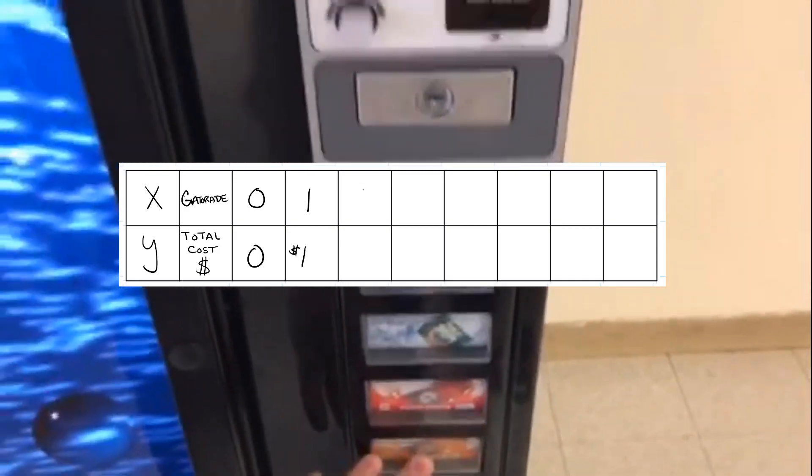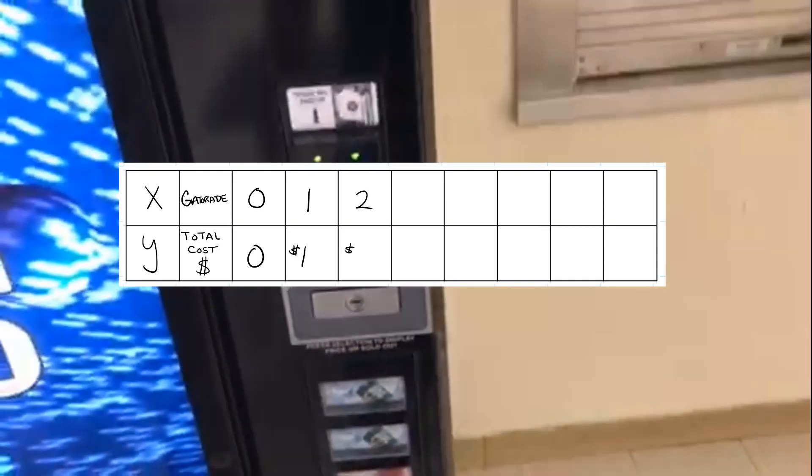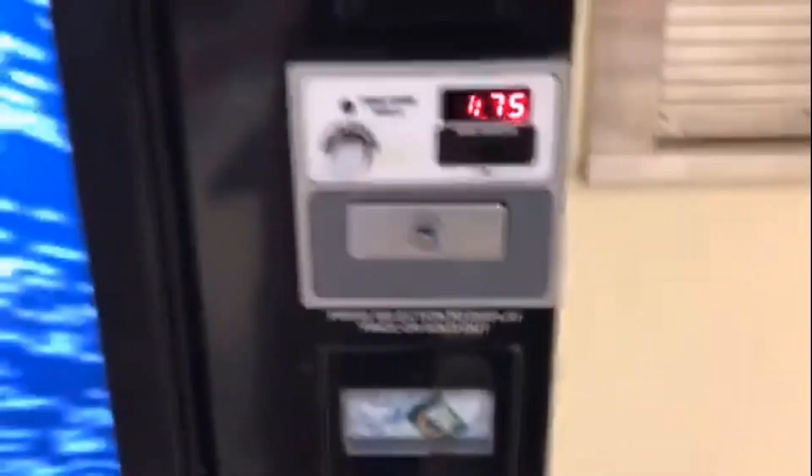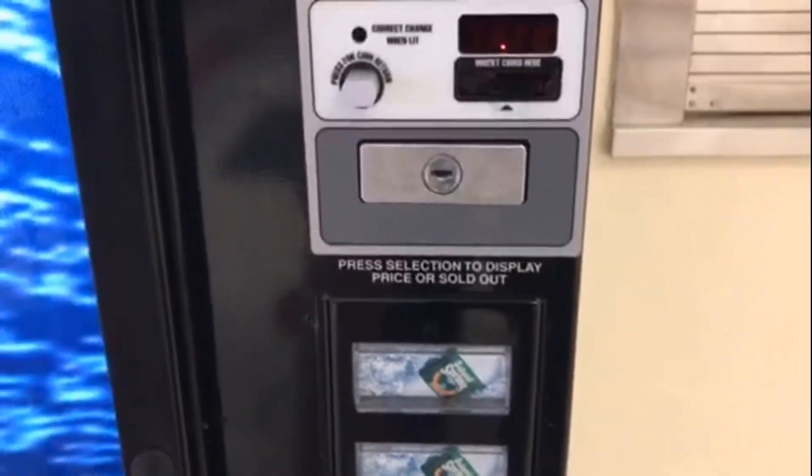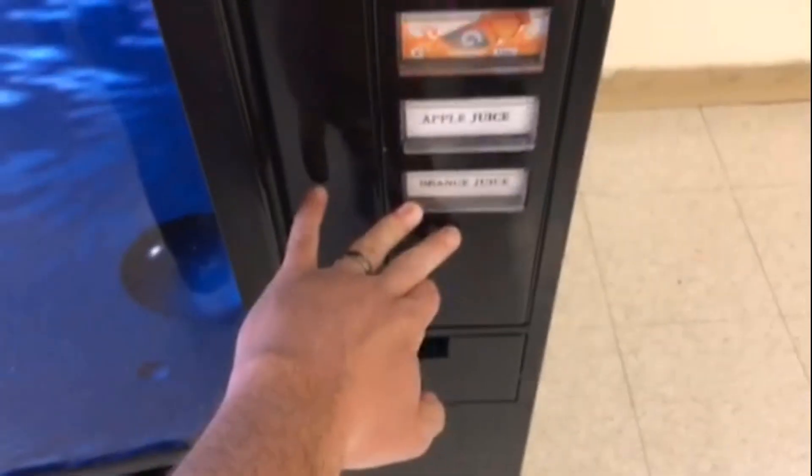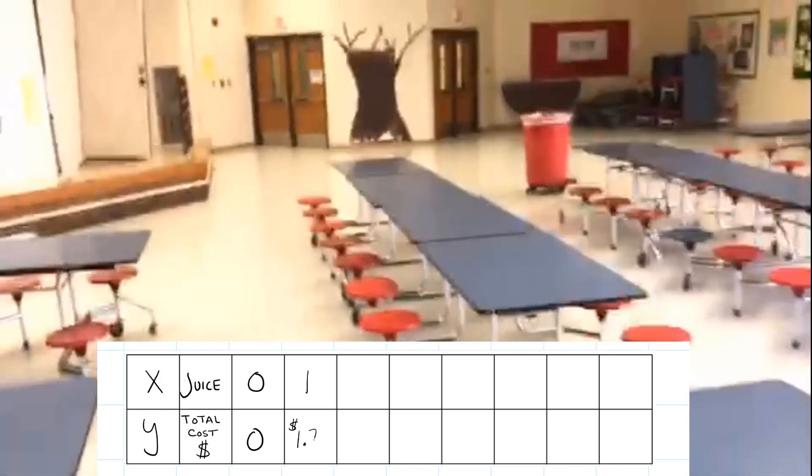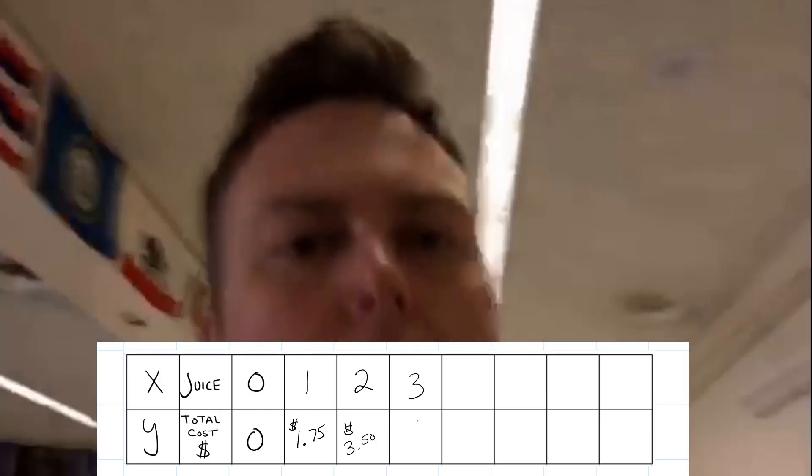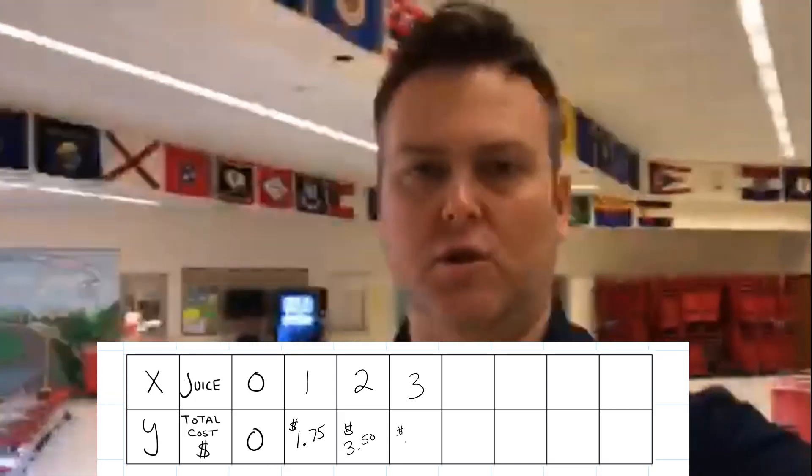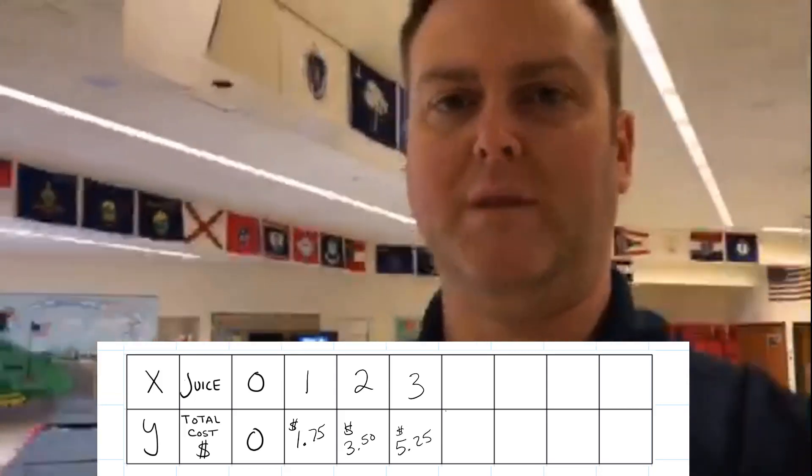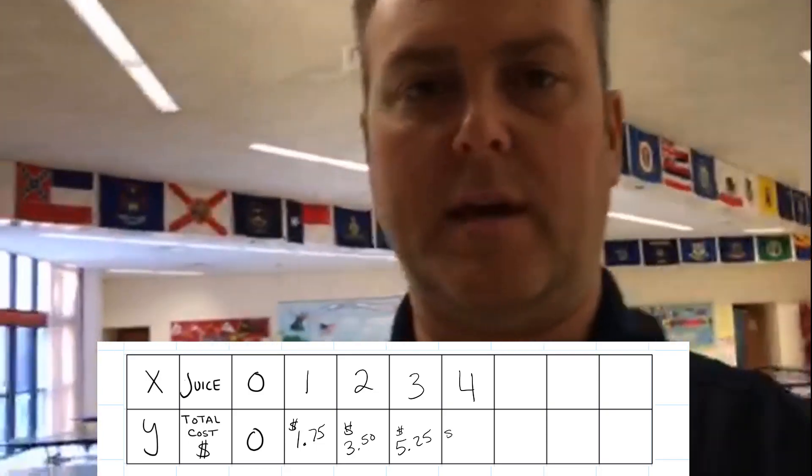Gatorade, dollar. Another Gatorade, another dollar. I can keep buying Gatorades as long as I have a dollar. Apple juice, $1.75. Orange juice, also $1.75. I can keep buying them as long as I have that money. It's not going to change. The price isn't going to change. That's the best part about it. The price isn't going to change at all. It's a proportional relationship. That's what we've got to understand.